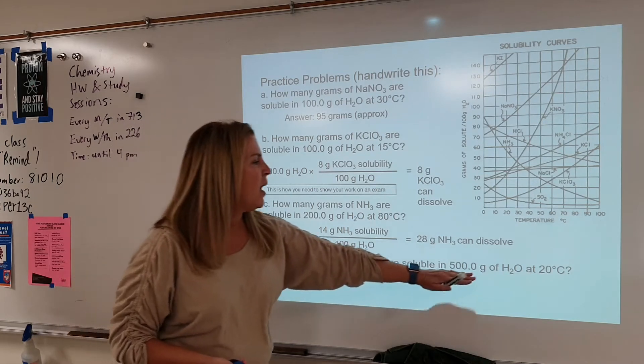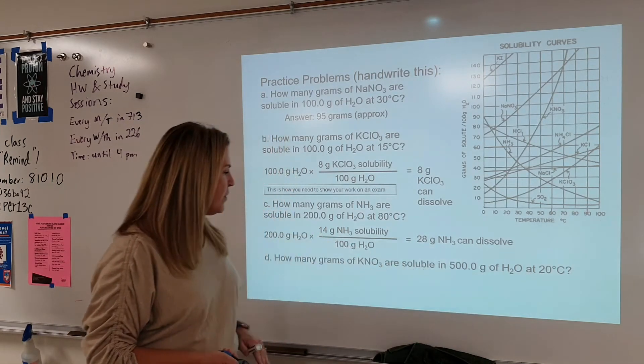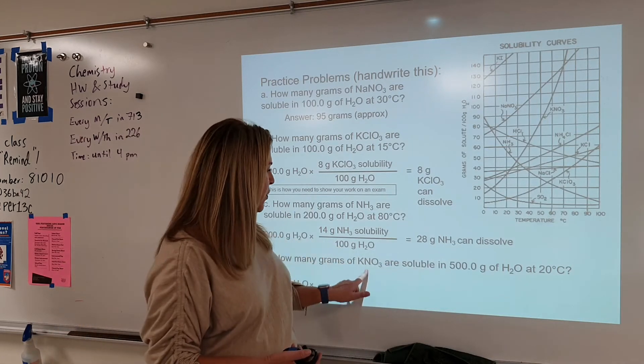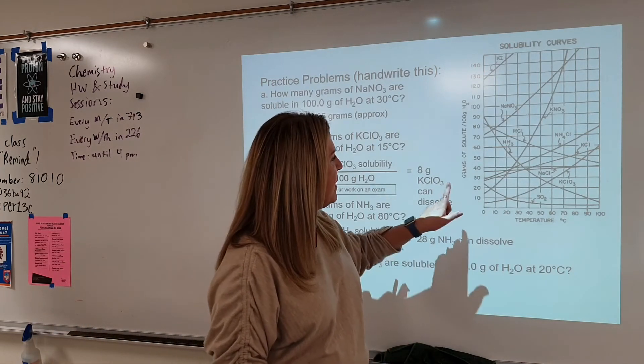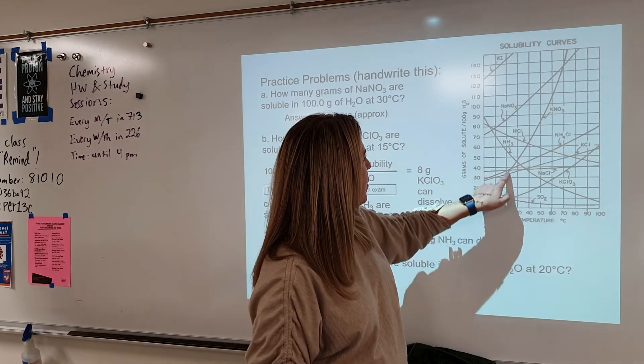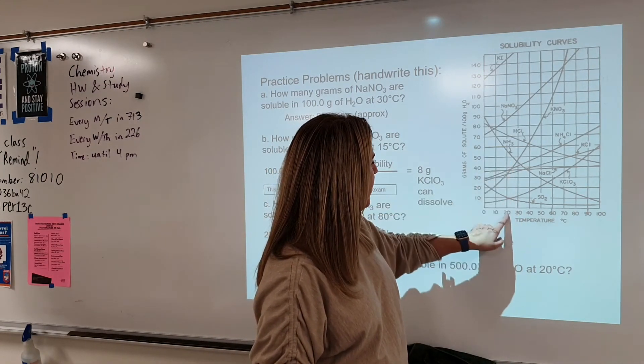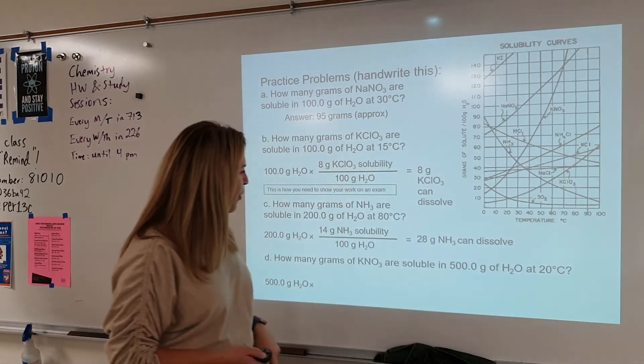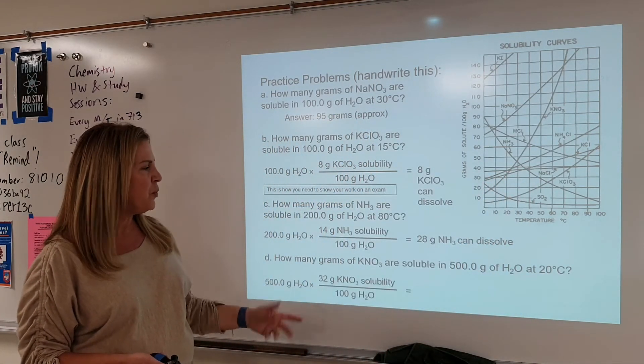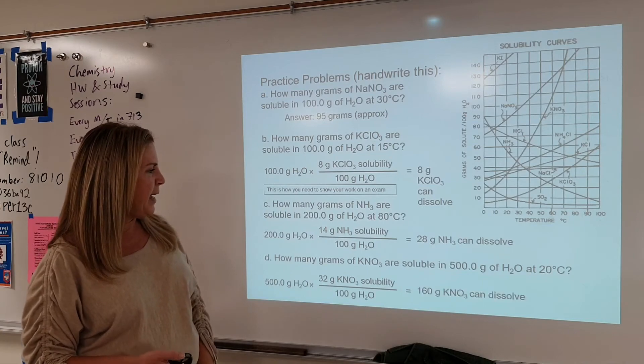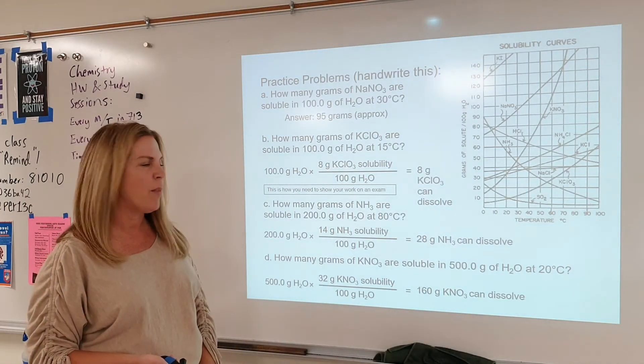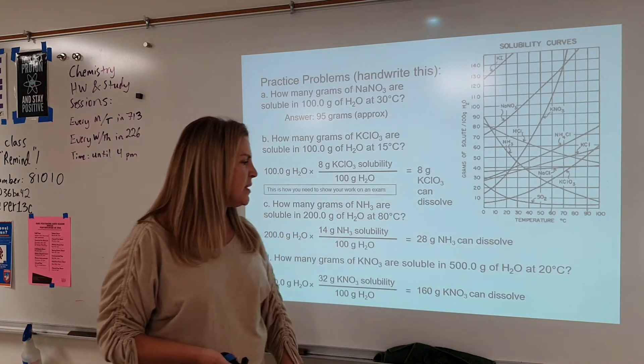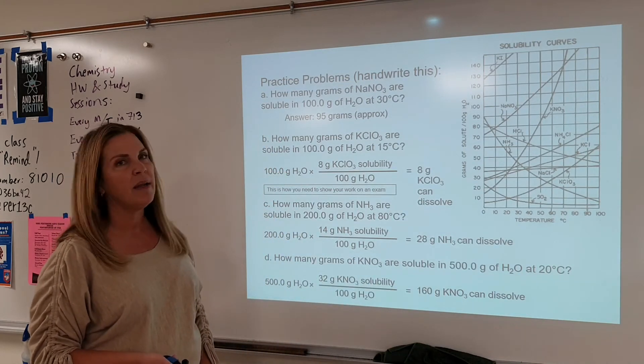All right. So again, we have 500 grams of water this time. So we're going to start with that 500 grams. You're going to go to our graph of potassium nitrate and 20 degrees Celsius. So there is our KNO3 right here. So we go 20 to the KNO3. We're going to come across. It looks like it's about 35, 32 works. And there you go. You do the multiplication. Grams of water cancels. We are left with 160 grams of potassium nitrate can dissolve.